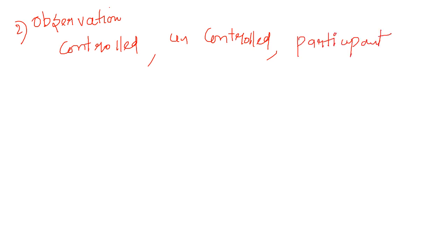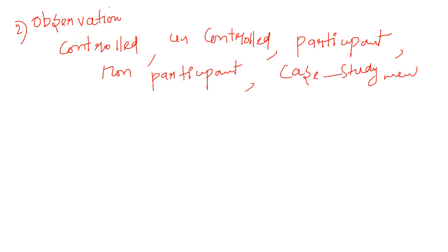Other observation types include participant and non-participant observation, and the case study method. Observation is the perception with a purpose — it is the process of acquiring knowledge through the use of sense organs. According to P.D. Young, a case study is a method of exploring and analyzing the life of a unit, whether a person or otherwise.